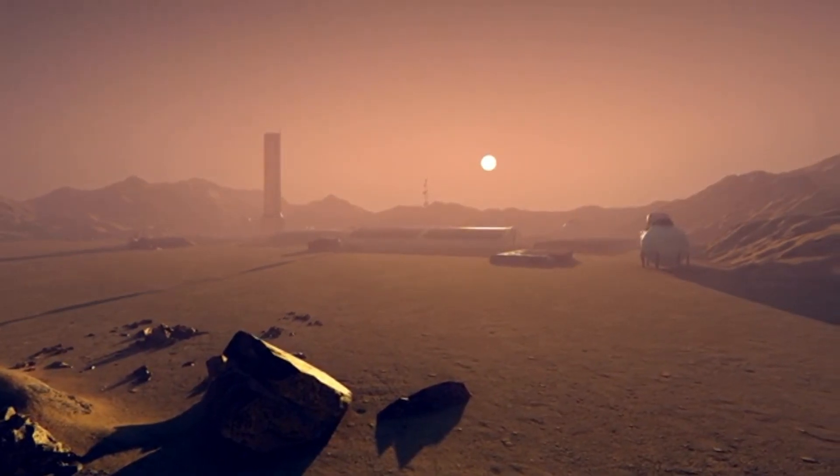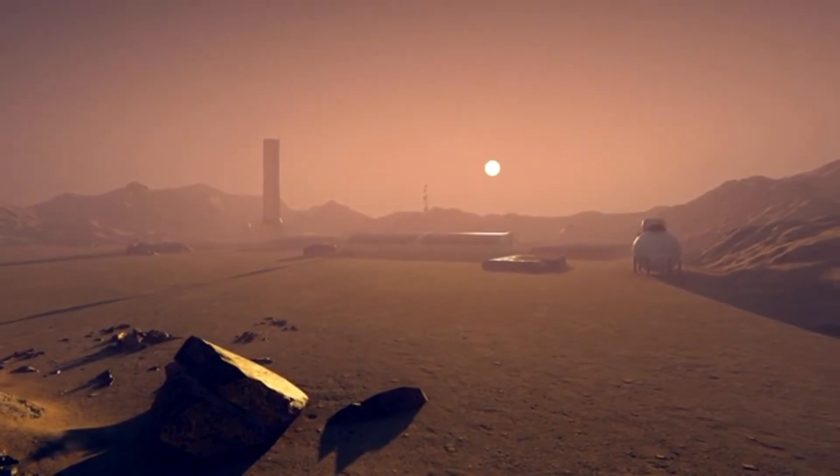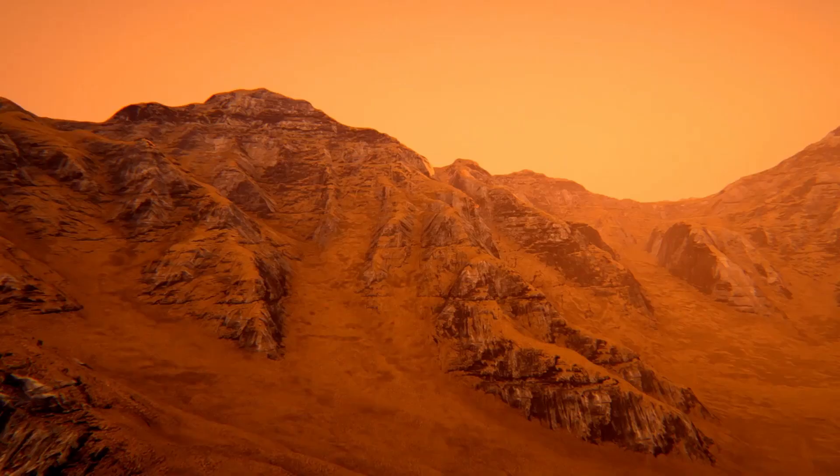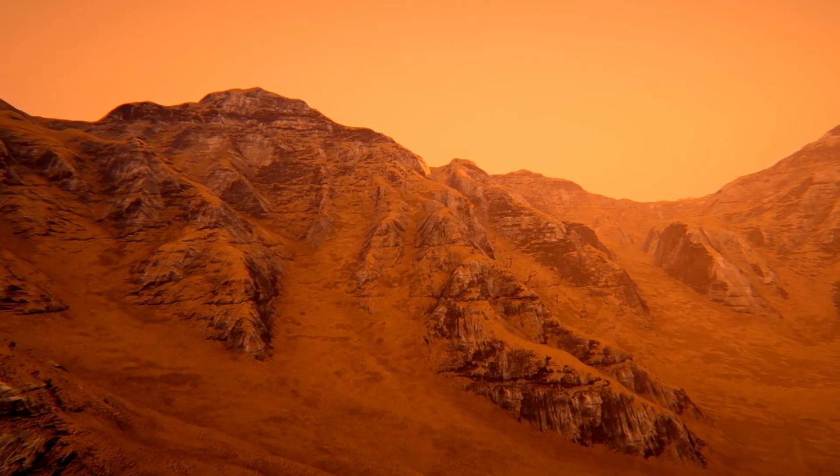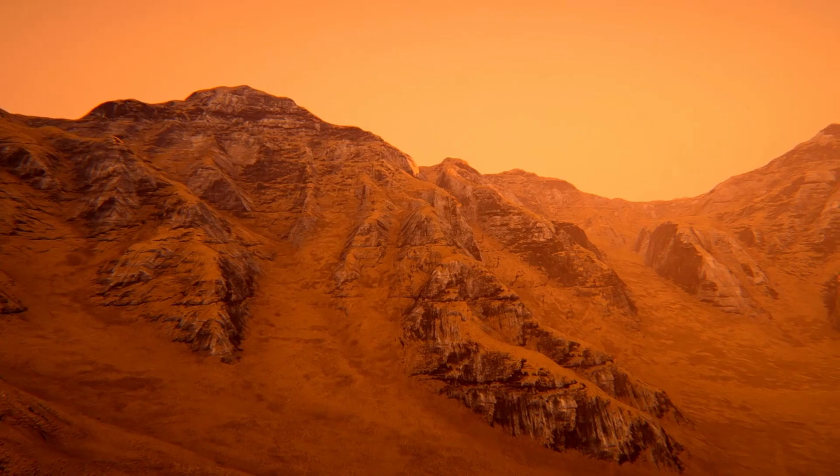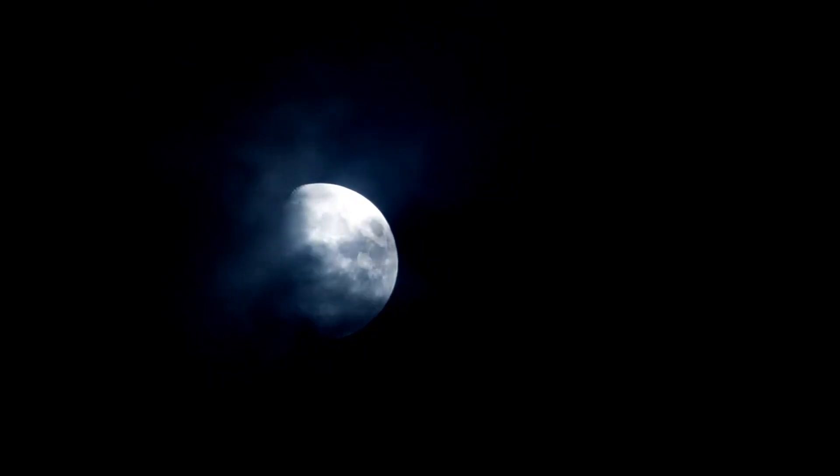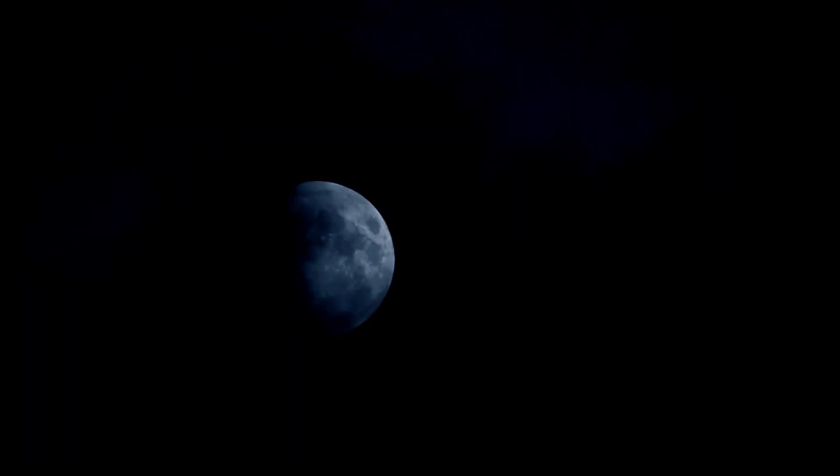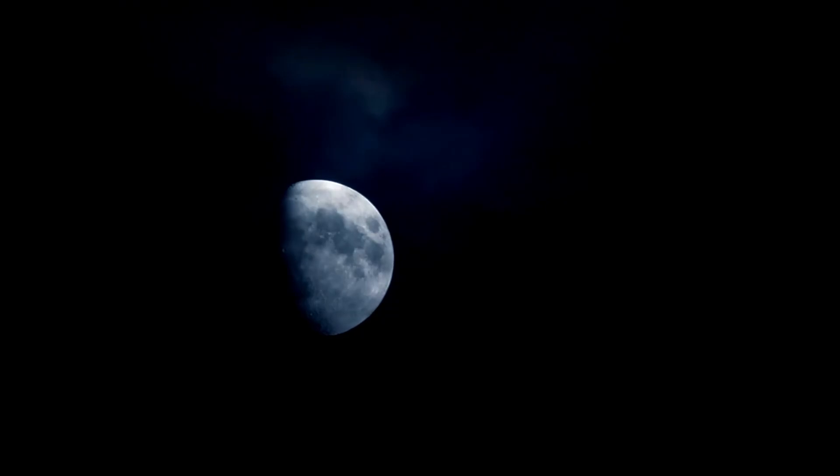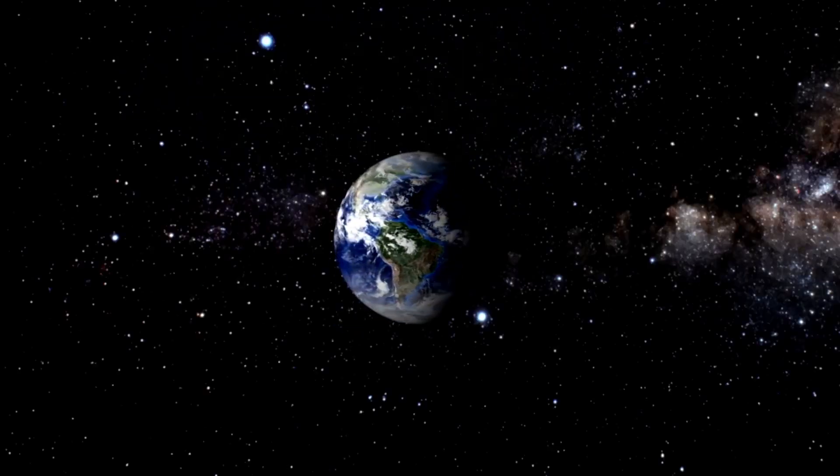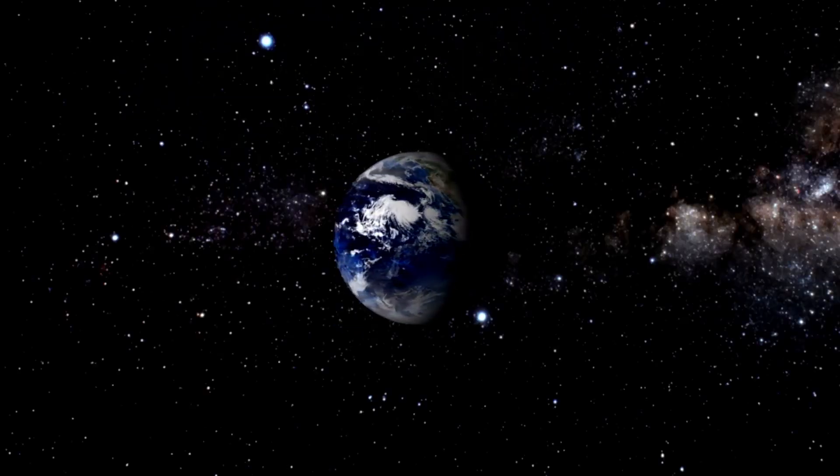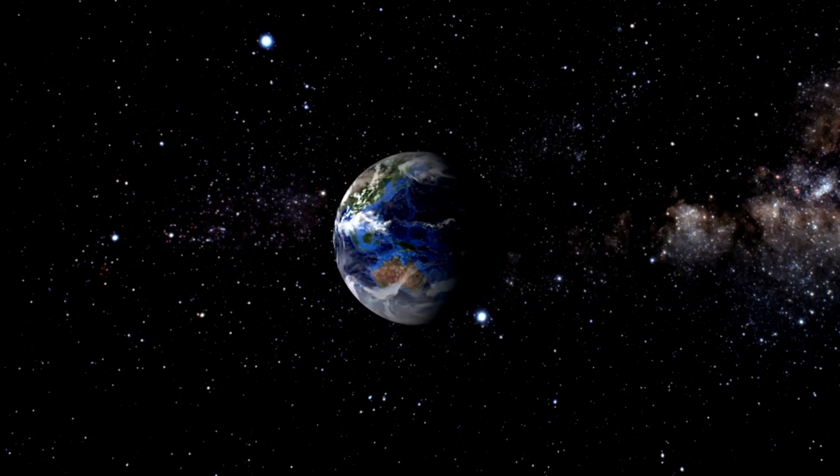One star system of particular interest is TRAPPIST-1, located approximately 40 light years away from Earth. This star system, with seven Earth-sized planets orbiting it, is pivotal in the search for habitable worlds. NASA factors in various parameters such as size, distance from the host star, and atmospheric composition to assess a planet's potential to support life.